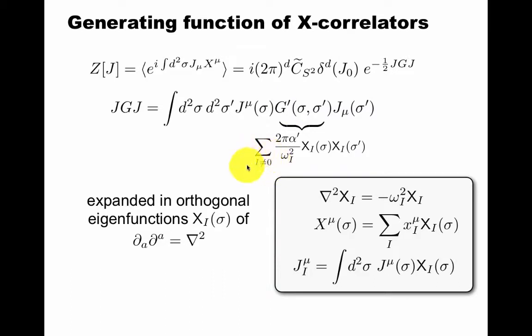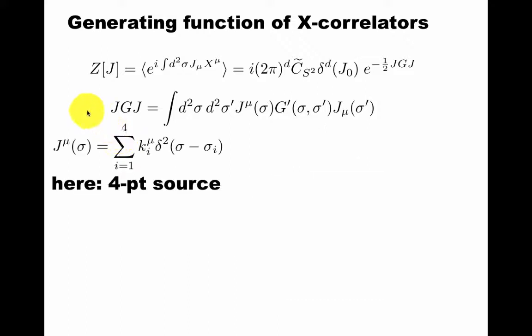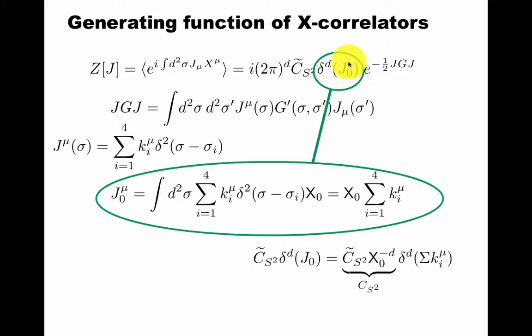G prime means you exclude the zero mode, and it's the usual strategy of expanding in orthogonal eigenfunctions of the differential operator you're interested in for the free theory. We're going to plug in a 4-point source. We put j mu equals k's times delta functions to recreate our exponentials. The j0 is up to the sum of the momenta. So the bottom line is the delta function here just expresses momentum conservation.